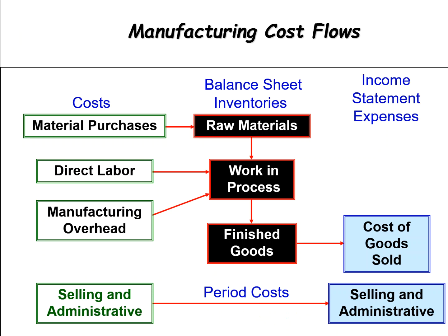The final slide shows the flow of goods. Raw materials are moved onto the balance sheet. As we requisition raw materials into production, we add labor and overhead to get those materials completed — all of that goes into work in process. Once items are completed, we transfer those costs into finished goods inventory. Once items are sold, those costs shift from the balance sheet to the income statement as cost of goods sold. And don't forget period costs — selling and administrative expenses — which get expensed directly to the income statement as incurred. That's it for Chapter 18.